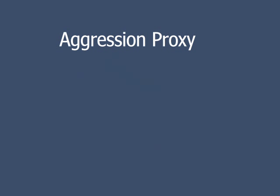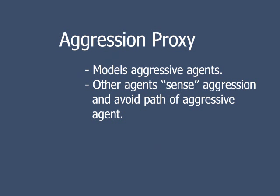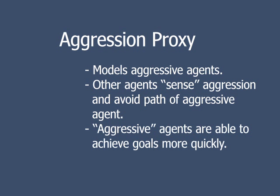The aggression proxy allows us to model aggressive agents. The agents project a presence in the direction they would like to travel, causing other agents to clear the path. We expect that agents with aggression proxies should achieve their goal more quickly.